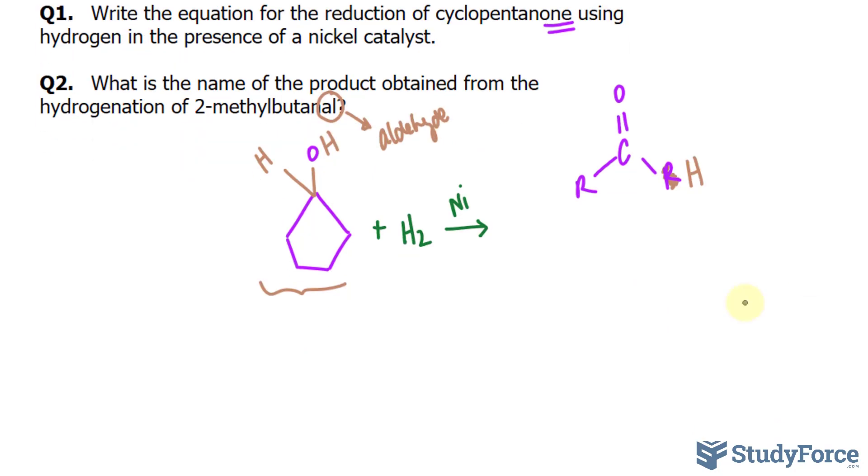Let's draw this out. 2-methylbutanal. But is a 4-carbon chain. And it's an aldehyde, so expect this to be double bonded to oxygen and the hydrogen here. 2-methyl means that we'll have a methyl group on carbon 2, and the rest of the molecule should look like this.